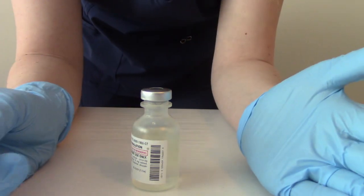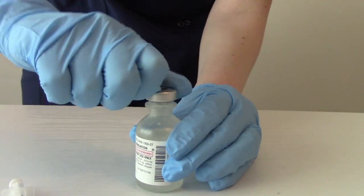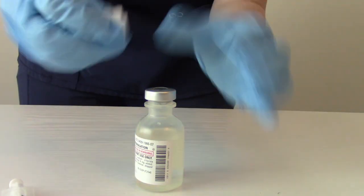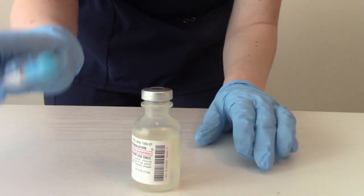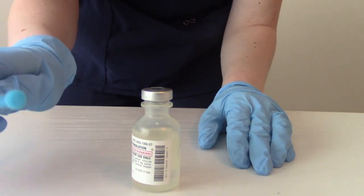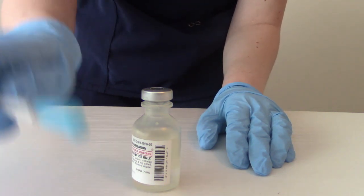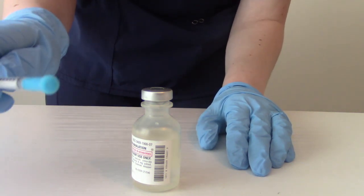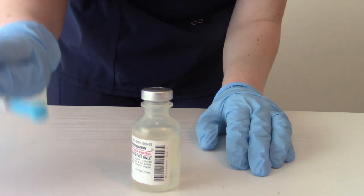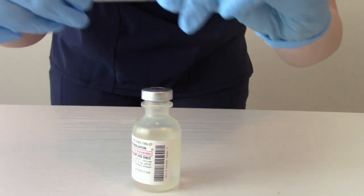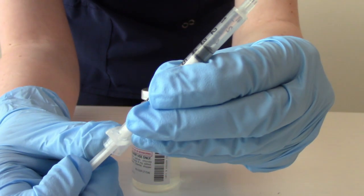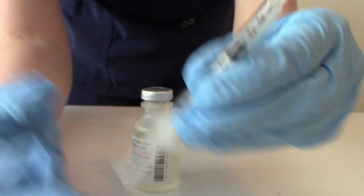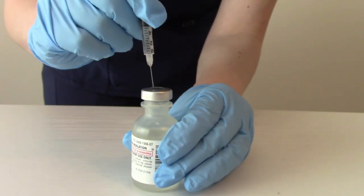So now we're ready to draw up. We're going to pop off the cap, alcohol wipe, and we're going to draw back our air. The amount of air we draw back is the amount of fluid we are going to take out of the vial. So let's say it's 0.3. We're going to pull back to the 0.3 of air, inject that, and then flip it upside down and pull back 0.3 of the fluid.